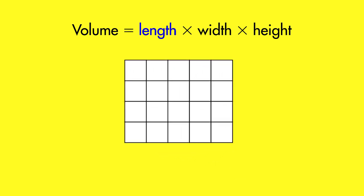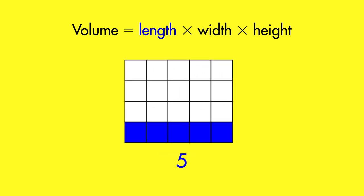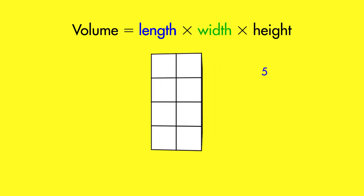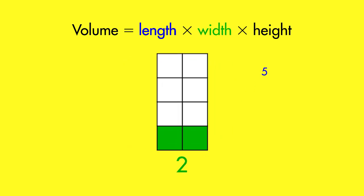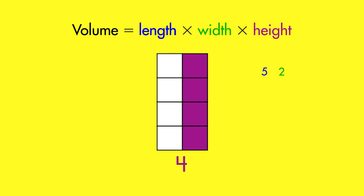The rectangular prism's length is 5 cubes, its width is 2 cubes, and its height is 4 cubes.